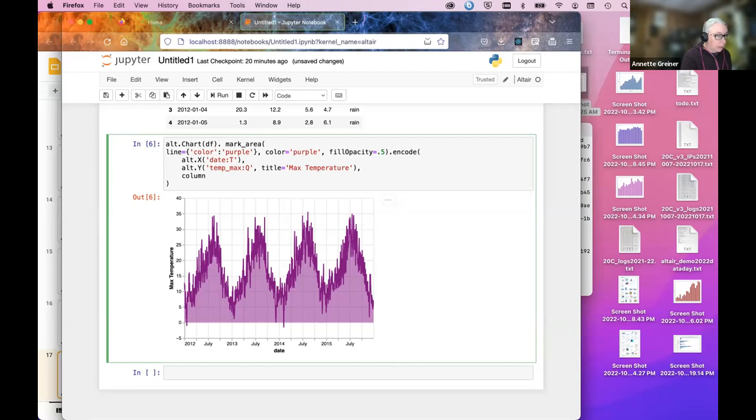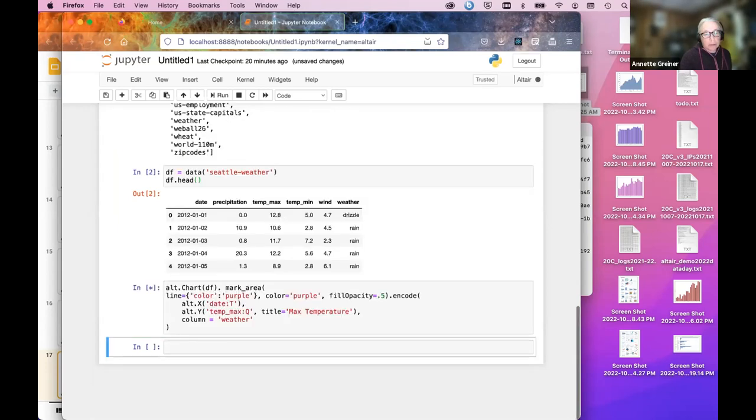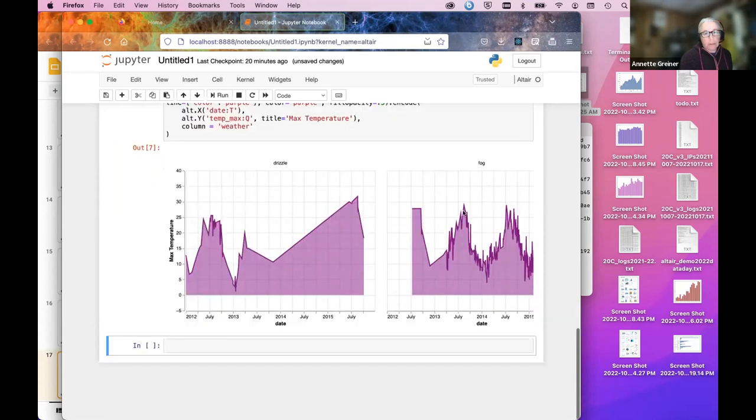But what if we want to do something like just bring in another variable? So this is a really powerful feature where you can say, well, I want to break out multiple charts based on a single column. So I'm using the weather, which is going to give me four different or five different charts for the different kinds of weather.